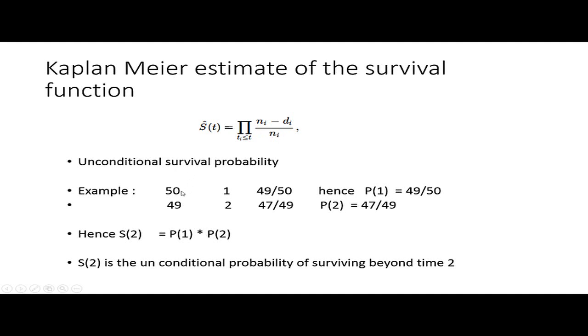To give an example, we are observing 50 patients in a study. In time 1, one patient is dying, so conditional survival probability is 49 by 50. In time 2, we have only 49 observations now. Two out of them are dying. The conditional probability of surviving beyond time 2 is 47 by 49. We define survival probability S(2), which is the probability that a patient is going to survive beyond time 2, as P(1) times P(2).